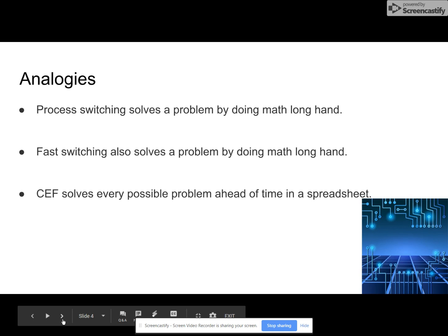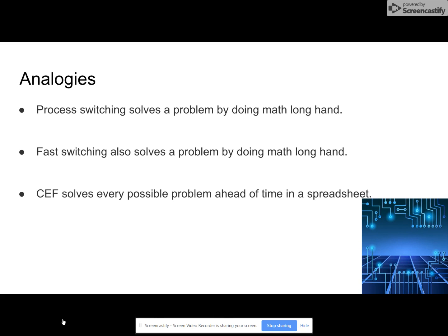Analogies: Process switching solves a problem by doing math longhand. Fast switching solves a problem by doing math longhand one time and remembering the answer for subsequent identical problems. CEF solves every possible problem ahead of time in a spreadsheet.